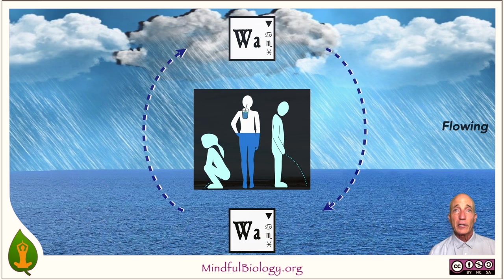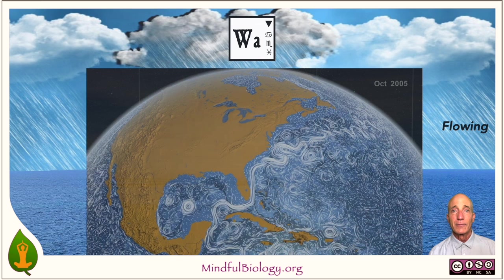The larger point here is that water is flowing all the time — through our bodies and through the biosphere. This is one of the three characteristics of water we're going to emphasize in this talk. Water moves on all scales: through our bodies and blood vessels, even the smallest capillaries, but also through oceans and these vast collections of water on Earth.